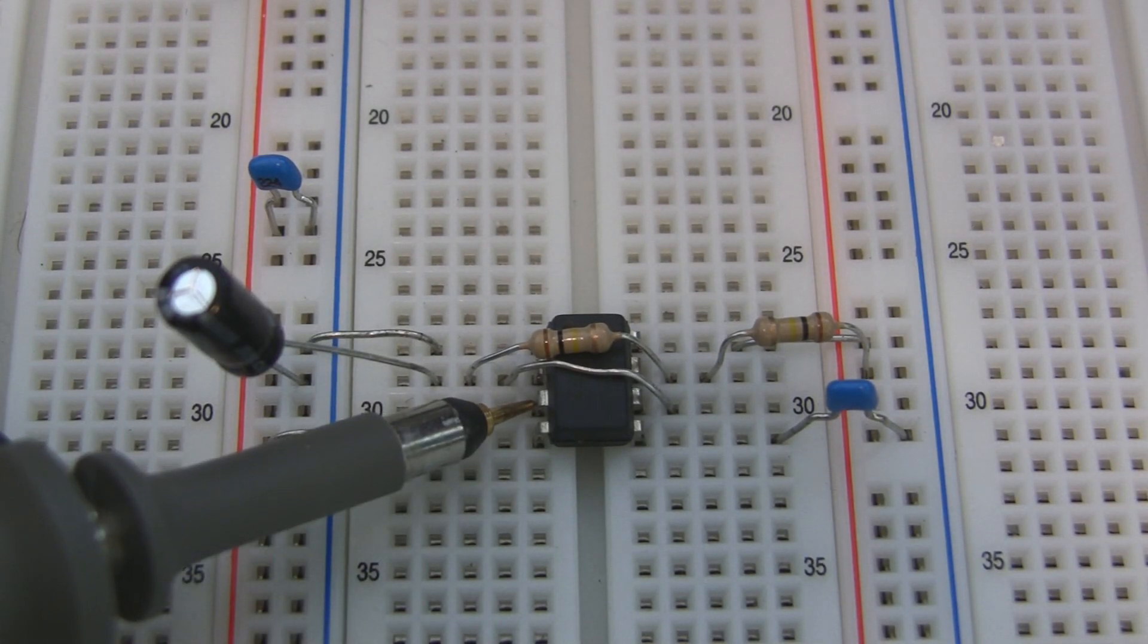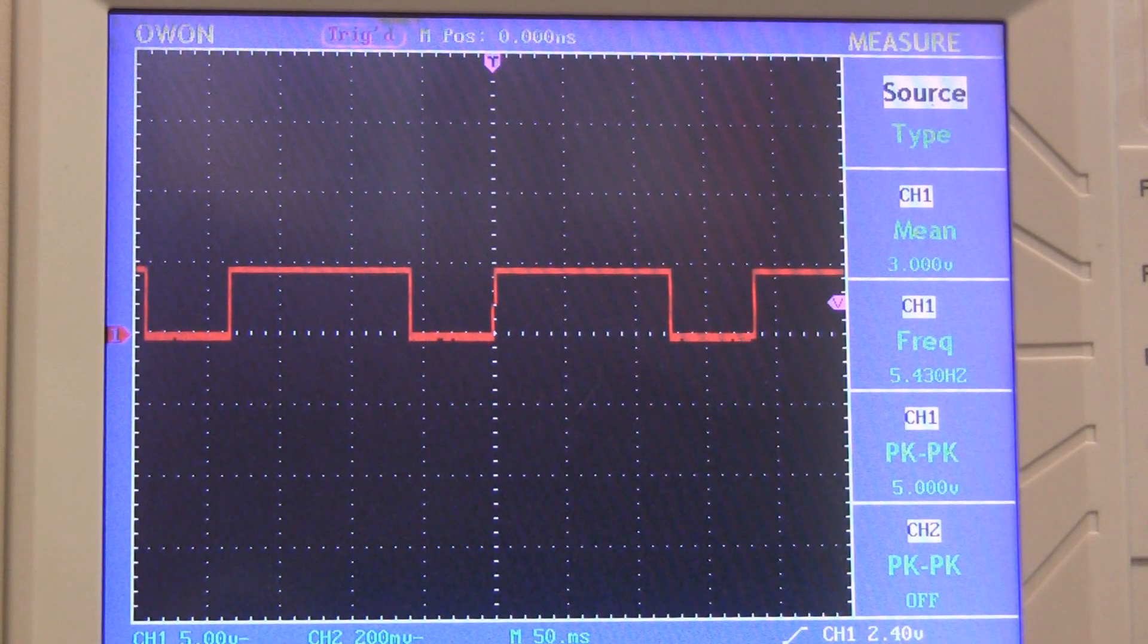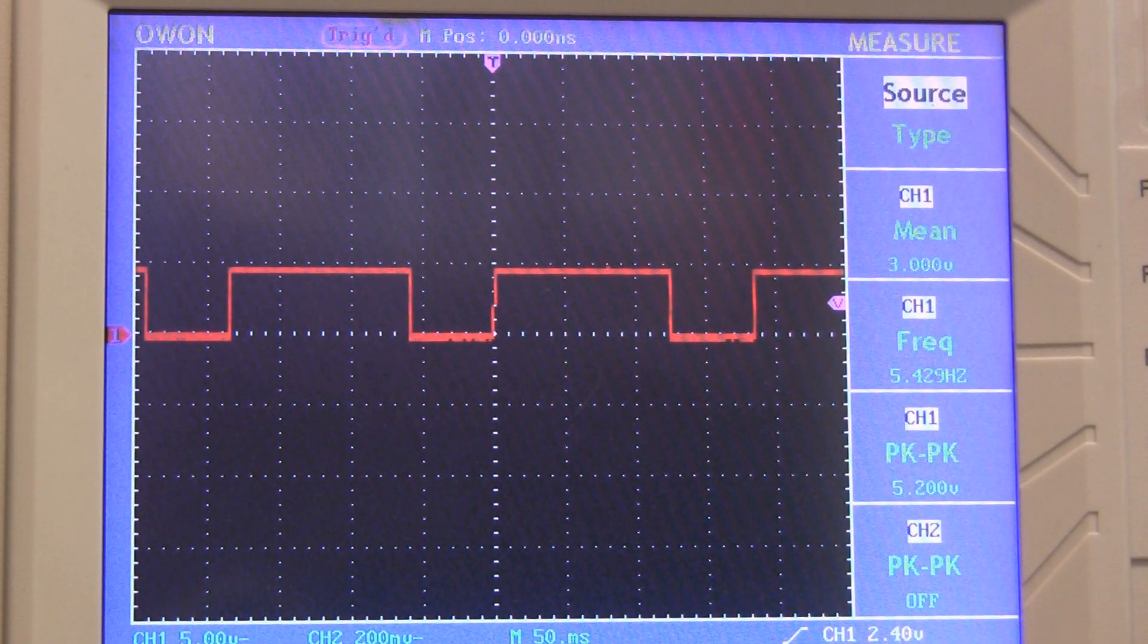If I probe pin 3, I can see the square wave output of the oscillator with the voltage oscillating back and forth between 0 volts and 5 volts.